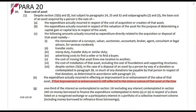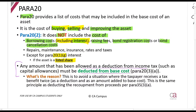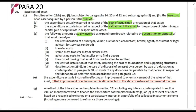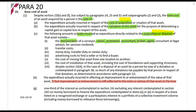Here is paragraph 20. It says: despite section 23(b) and (f), but subject to paragraphs 24, 25, and 32, the base cost of an asset is the sum of expenditure actually incurred in the acquisition of the asset, expenditure actually incurred in respect of valuation of the asset, and the following amounts actually incurred in relation to the acquisition or disposal of the asset. So it's the cost of buying, selling, and improving the asset. What can be included: remuneration paid to an accountant, auctioneer, valuer, or agent — so if you have an agent's commission selling a house, you include that. Also transfer costs, stamp duty, advertising costs to find the seller or buyer, cost of moving that asset, and cost of installation of that asset.